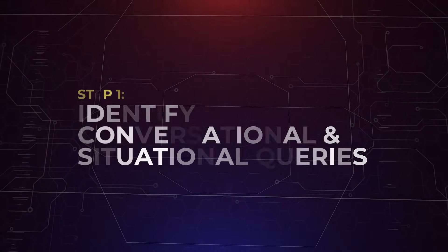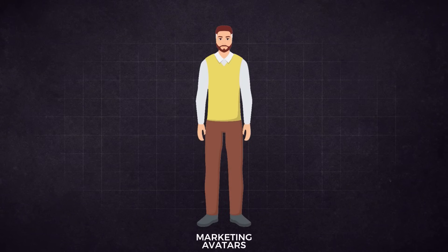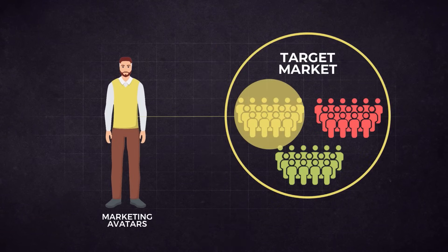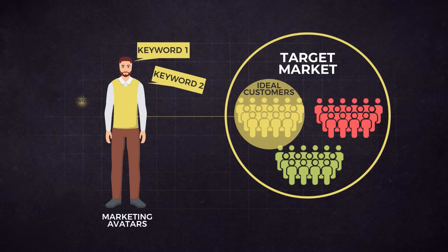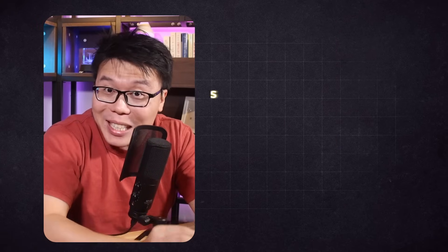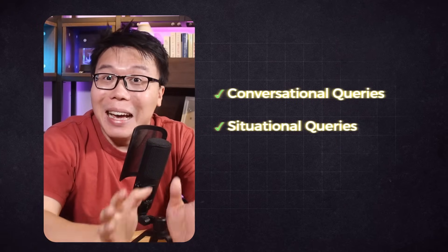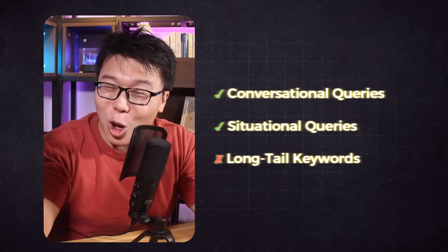Stay tuned. Let's start with the first step. In traditional keyword research, the first step is to brainstorm keyword ideas that your potential customers may be searching for. Some marketing teams develop marketing avatars — a fictional representation of their ideal customer — to brainstorm keywords from the avatar's point of view. But in the AI search era, we can do things differently. We are looking for conversational and situational queries rather than long tail keywords.